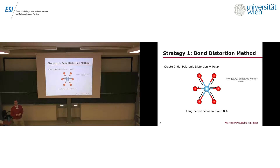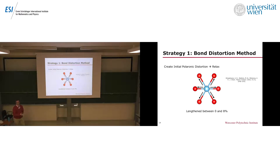Let me introduce two strategies. The first is what I call the bond distortion method. It's a really simple method where I look at the polaron site — for instance, a titanium cation bonded to six oxygen atoms. In metal oxides, when a polaron forms, bond lengths tend to increase as the extra electron localizes on one of the cations. So I increase the bond distances for my initial geometry and feed that to the code, allowing it to optimize. We looked at bond length increases between 0 and 8%. I'll point out this has also been used by Keith McKenna and others in the literature.